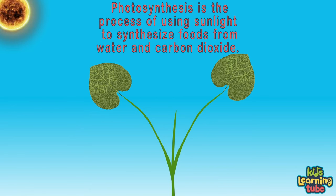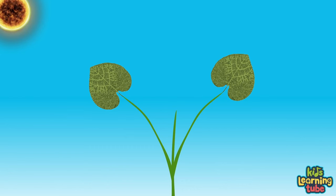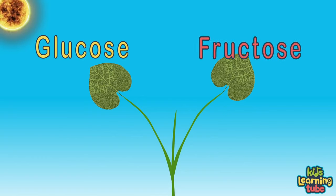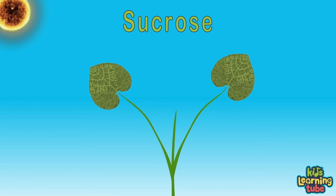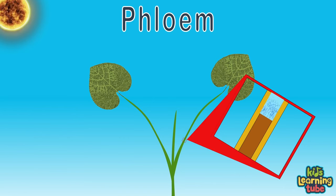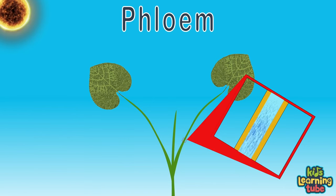Photosynthesis is the process of using sunlight to synthesize foods from water and carbon dioxide. This sugar food is called glucose and fructose, which are both converted by the plant into sucrose. The sucrose is the food that helps the plant grow and thrive, transferred through the phloem sap through the plant.